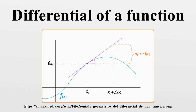More precisely, if f is a differentiable function at x, then the difference in y values satisfies an approximation where the error epsilon satisfies epsilon times delta x approaches zero as delta x approaches zero. In other words, one has the approximate identity in which the error can be made as small as desired relative to delta x by constraining delta x to be sufficiently small. As delta x approaches zero, for this reason, the differential of a function is known as the principal part of the increment of a function. The differential is a linear function of the increment delta x, and although the error epsilon may be non-linear, it tends to zero rapidly as delta x tends to zero.